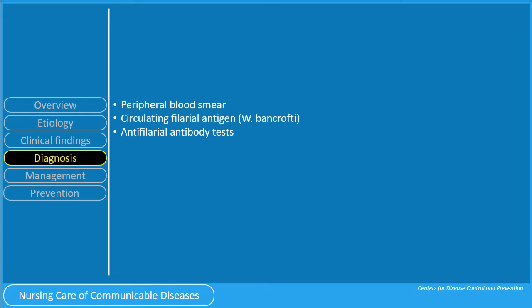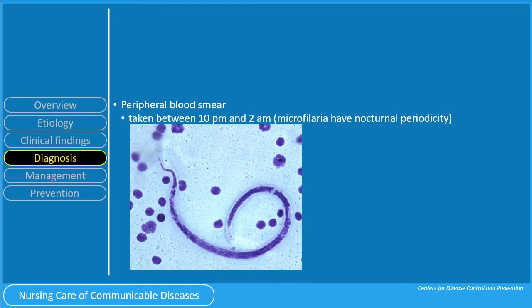Diagnostic tests include peripheral blood smear, circulating filarial antigen for W. bancrofti, and antifilarial antibody tests. The standard method for diagnosing active infection is the identification of microfilaria in a blood smear by microscopic examination. Peripheral blood smear determines the presence of microfilaria; it must be taken between 10 p.m. and 2 a.m. because the microfilaria have nocturnal periodicity. You can see in this slide the appearance of microfilaria under the microscope.